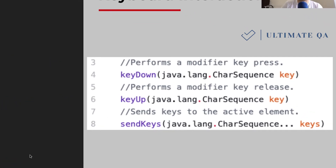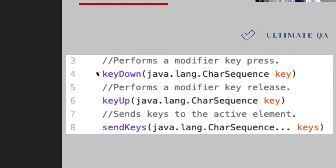There are keyboard actions you may need. The keyDown command presses a key — for example, pressing Enter, the up arrow, or a function key. After keyDown, you must follow it with keyUp so the key is released. You can also use sendKeys within the Actions API, similar to the standard sendKeys on an input box — but here you can send keys to any element or even the entire browser, such as opening developer tools by passing in those keyboard shortcuts.